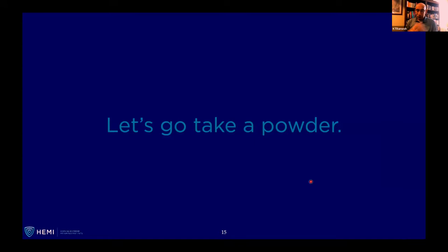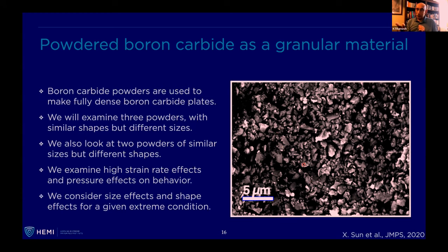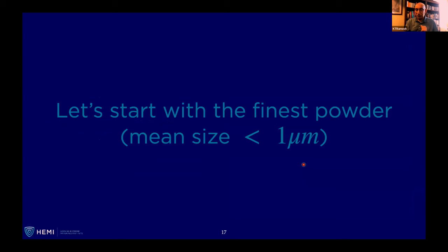We're going to start by taking a powder — a granular material. The powder is powdered boron carbide; you can see a micrograph on the right. It has an average grain size of just less than one micron — a very fine powder. These powders are actually used to make fully dense plates: you take the powder, stack it, and hot press it. In this talk, I'll take three powders with the same shapes but different size distributions. Separately, we'll take two powders of similar size but different shapes and ask for differences in behavior. We look at rate effects and pressure effects. This part of the work has just been published in JMPS.